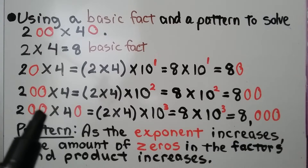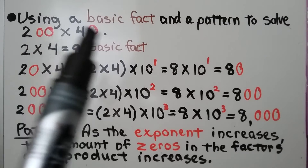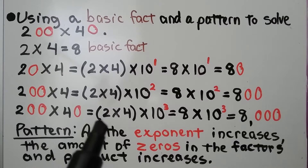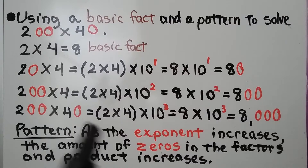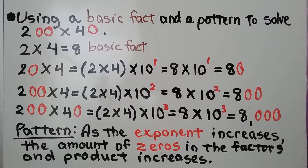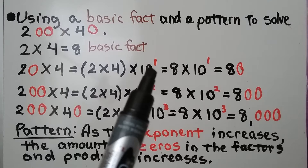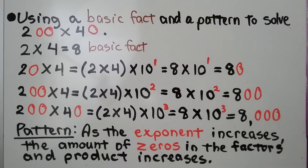Now we do 200 times 40, our original problem. Our basic facts are 2 times 4, and now there are three zeros, so we have times 10 to the third power. That equals 8 times 10 to the third power, which is 8,000. The pattern is: as the exponent increases — from 1 to 2 to 3 — the number of zeros in the factors and product increases.